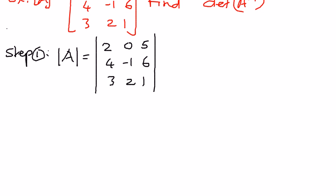For convenience sake, we will travel along the first row. According to our sign convention, the first element will have a positive sign, the second element will take on a negative sign, the third element will take on a positive sign. Therefore, the determinant is 2 times the minor, which is -1, 6, 2, and 1.